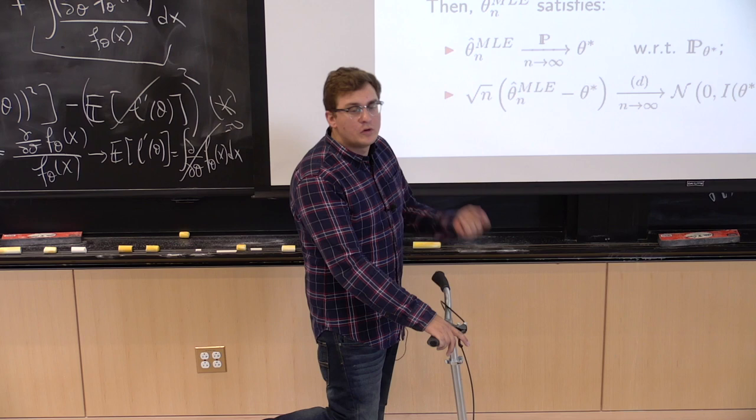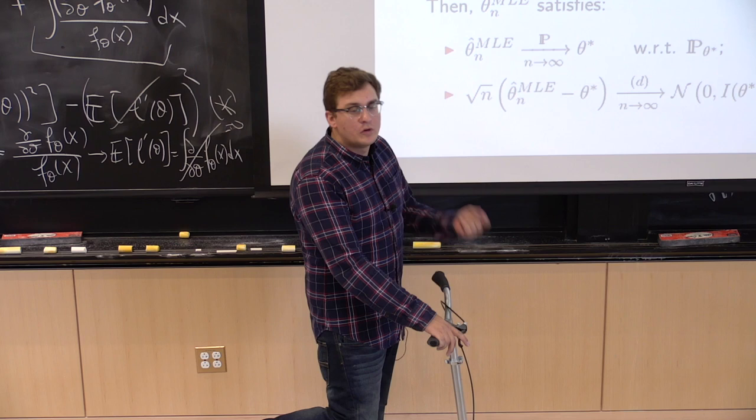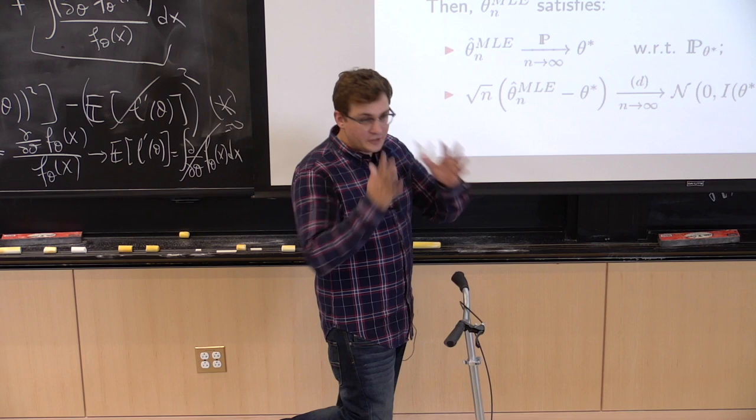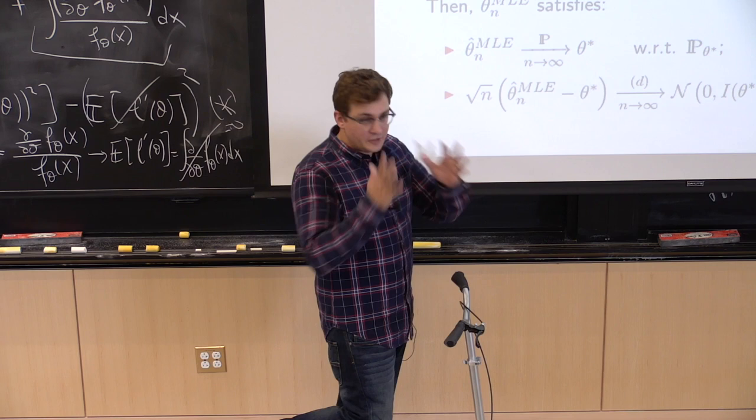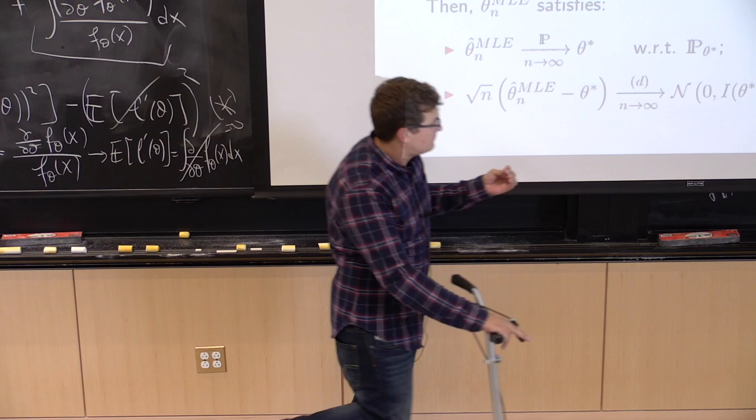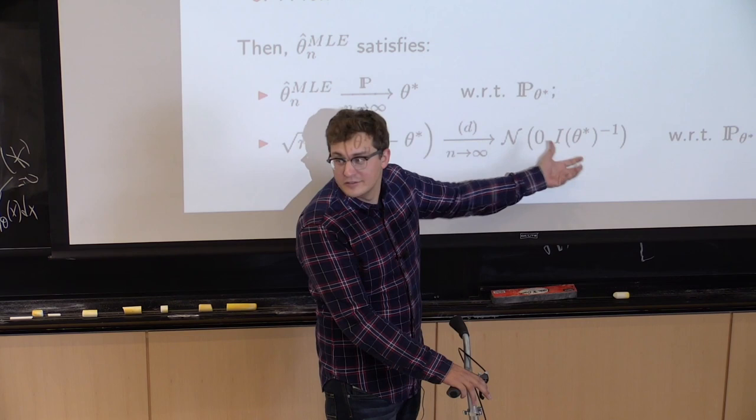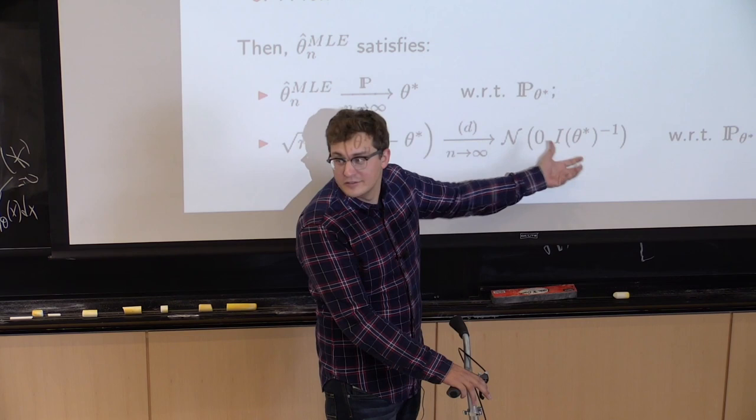The asymptotic variance is the inverse of the Fisher information — 1 over the curvature. If the curvature is flat, the variance is big. If the curvature is very high, the variance becomes very low. There's no extra fudge factors; it's all in the curvature. That illustrates everything we saw in the pictures.